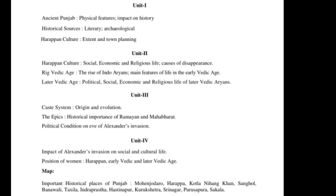Map — important historical places of Punjab: Mohenjodaro, Harappa, Kotla Nihang Khan, Sanghol, Banawali, Taxila, Indraprastha, Hastinapur, Kurukshetra, Srinagar, Purushpura, Sakala.